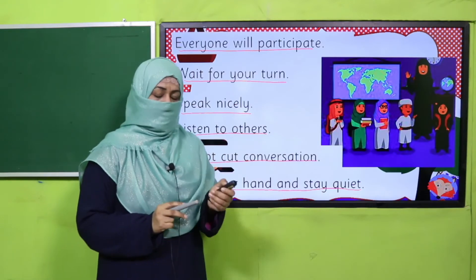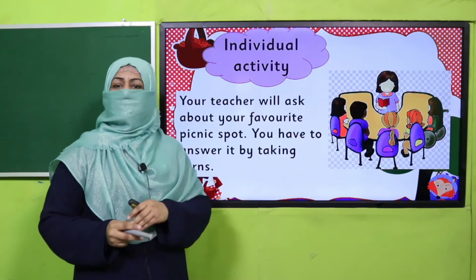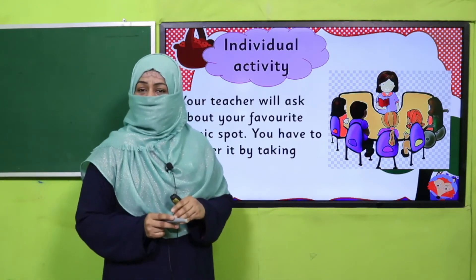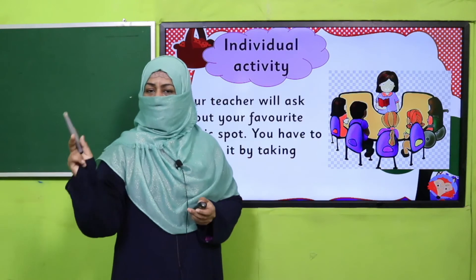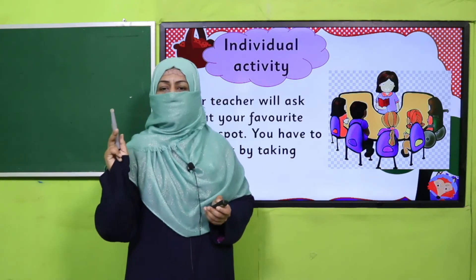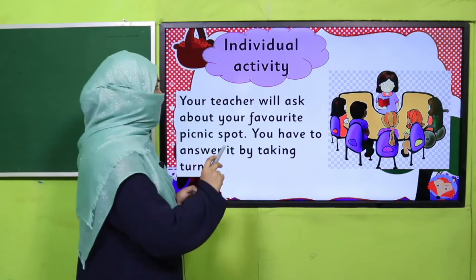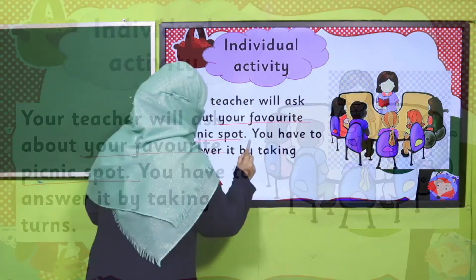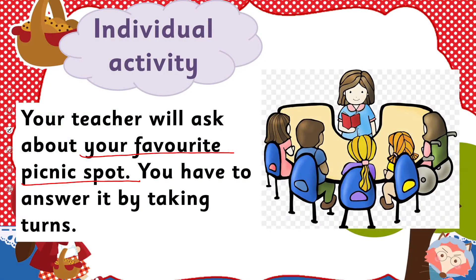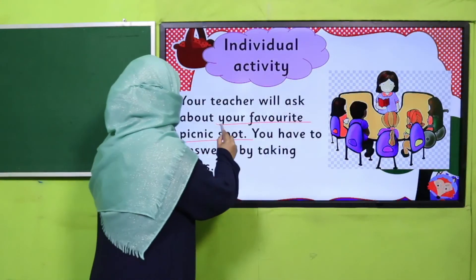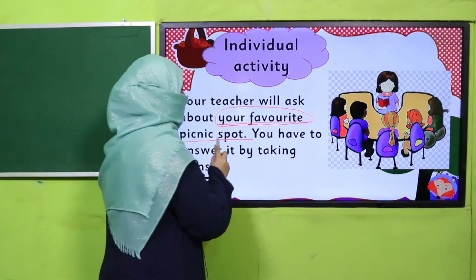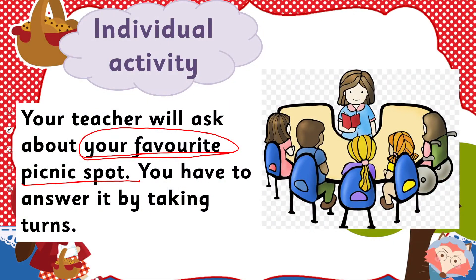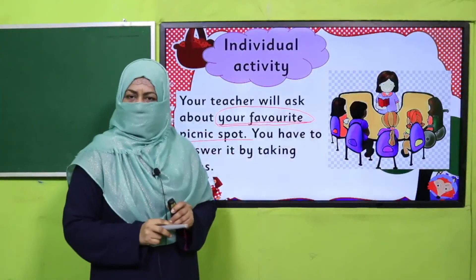It's activity time. Teacher, you will make the students sit in a sequence. As we learnt from the Sunnah today, we'll start from the right side. The student sitting on the right side will ask a question: what is your favorite picnic spot? All of you will tell about your favorite picnic spot, turn by turn. Pause the video and enjoy the activity.